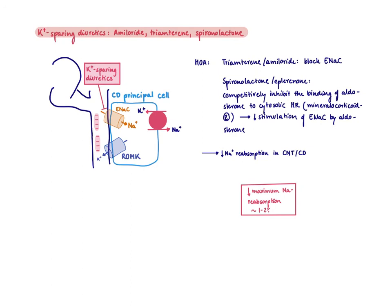The next drug class are the potassium-sparing diuretics. Within this class we actually have to differentiate between two subgroups. First, drugs like triamterene or amiloride that directly block ENaC. If ENaC is directly blocked, you're not going to take up sodium — you're going to lose it. Therefore, water follows and urine flow is increased.